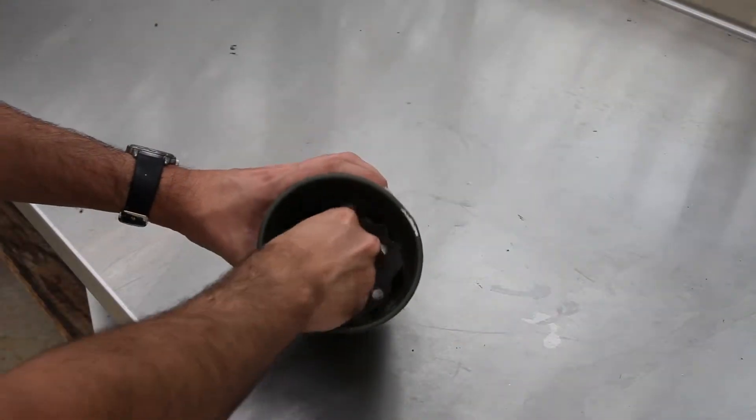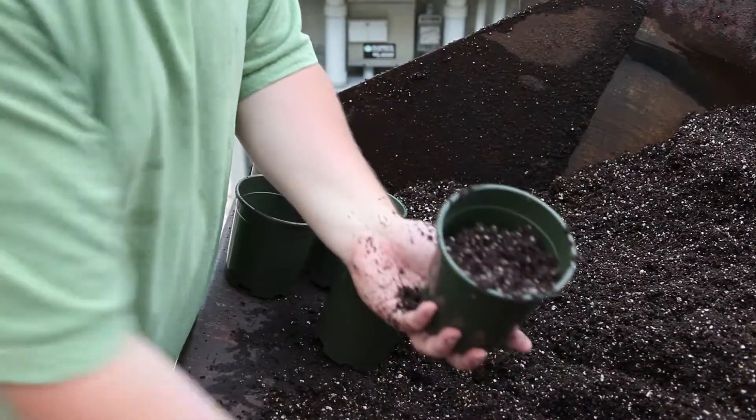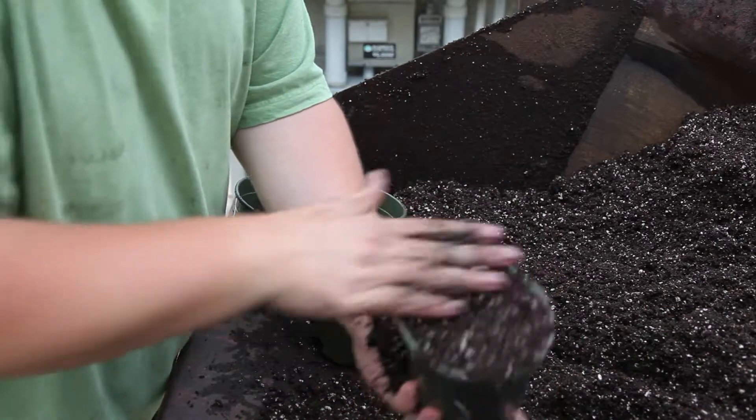Add a piece of cheesecloth to the bottom of the pot to keep soil from leaching out. Loosely fill the pot with soil, leveling the soil surface with the top of the pot.